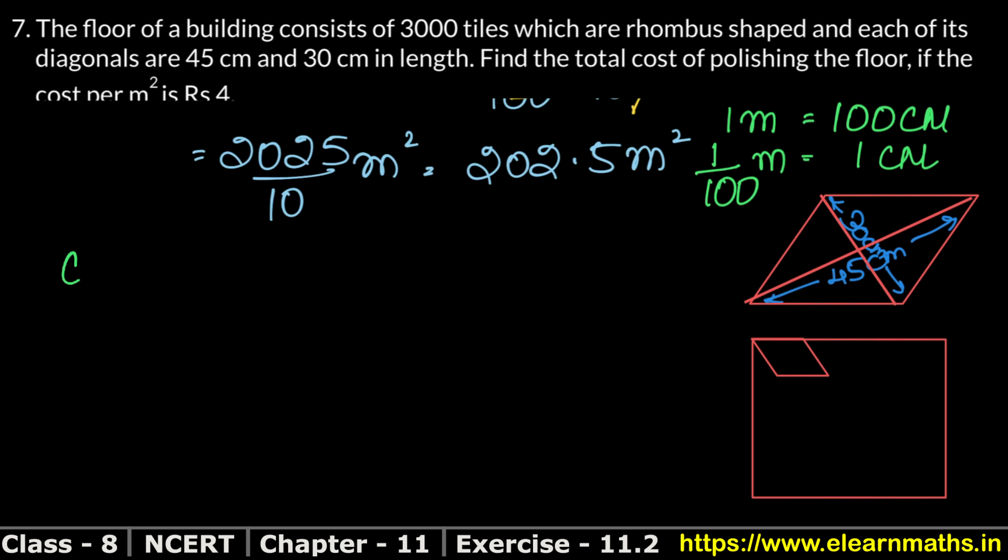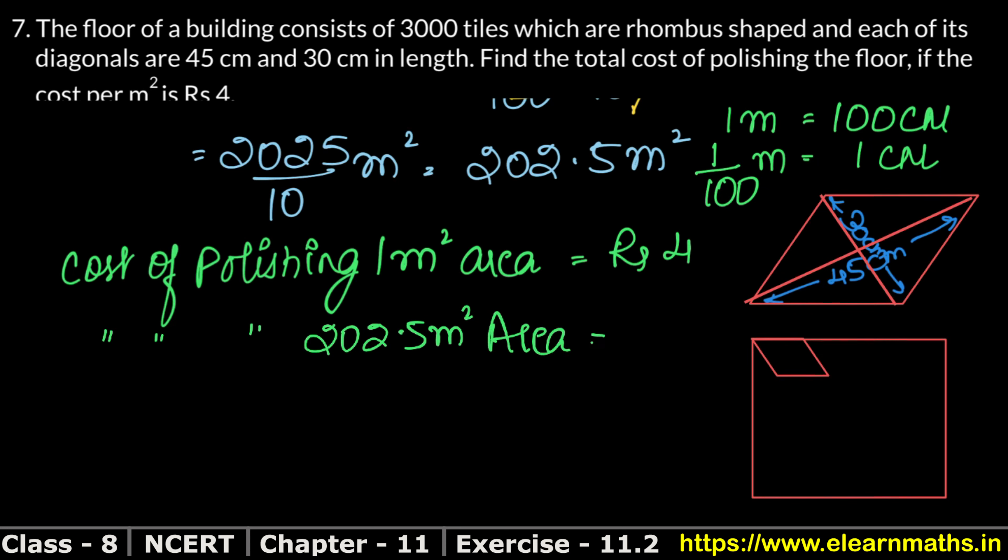Now the cost of polishing 1 meter square area is Rs. 4. So what is the cost of polishing 202.5 meters square area? When the value is given for one and we need to find for more, what do we do? Multiply. So 202.5 times Rs. 4.